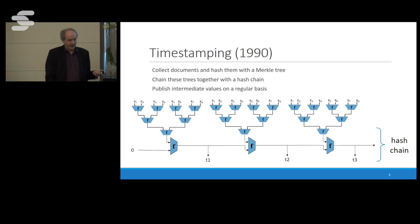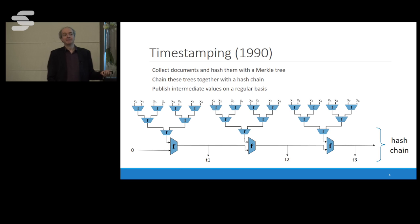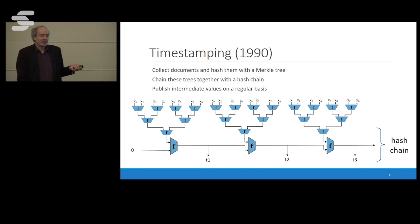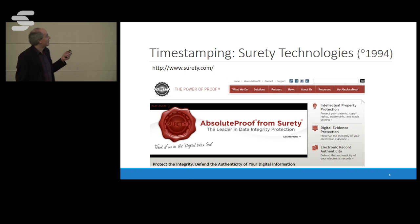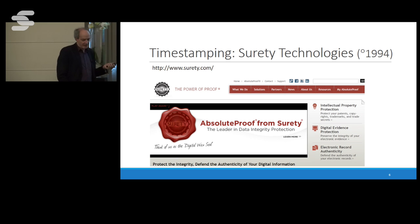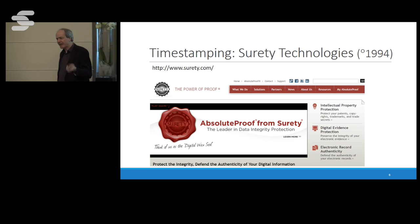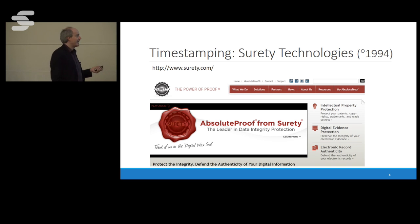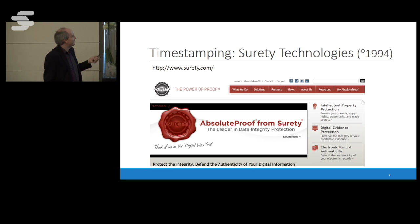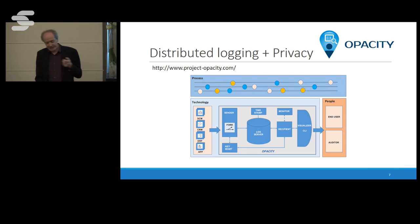This company was actually created, and their slogan is: 'You can't trust us because you don't have to.' If they include everything, they cannot go back and change reality unless they can break the hash function. This company is called Surety Technologies, started in 1994, based on patents from Stuart Haber and Cornetta. It never became really successful, but it still exists. I think if they now went to venture capitalists and said 'we do blockchain,' they'd probably get heaps of money.